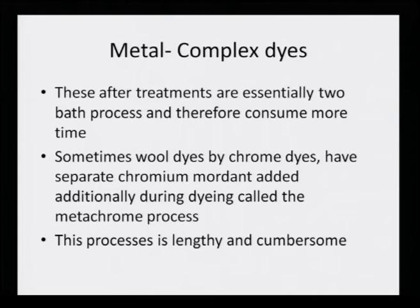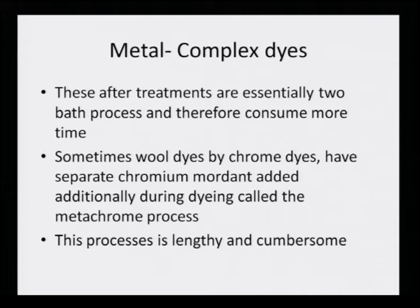Sometimes wool dyed by chrome dyes has separate chromium mordant added additionally during dyeing — called the metachrome process. The simultaneous chroming can also be done and that is also called the metachrome process, but these processes are very lengthy and cumbersome because the wool is dyed with chrome dye — chromium is already present — and additional chromium salt is added. Therefore the whole dye bath becomes extremely hazardous from the point of view of its disposal, but these processes were nevertheless developed particularly for wool dyeing.